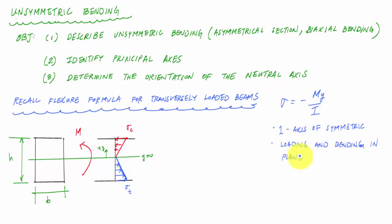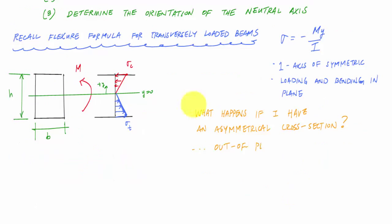So the question we're gonna try to answer here is: what happens if the cross-section isn't symmetric? What if it's just some random looking potato looking cross-section? Or what if the loading and the bending don't happen in plane? How do I calculate the normal stress? Is my stress profile still linear?